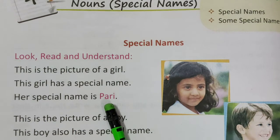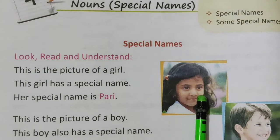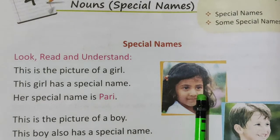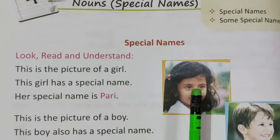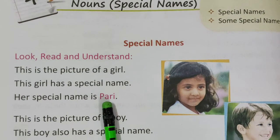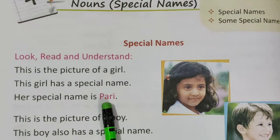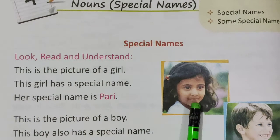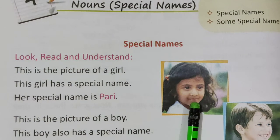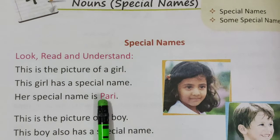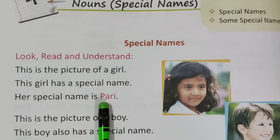Toh jo Pari hai, woh is girl ka identification hai. Is liye Pari kya hai? Special name hai. Pari ki naam se is girl ko pehchana jata hai. Is liye ye kya hai? Iske special name hai.